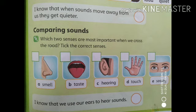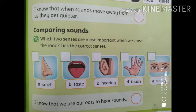So students, aapko kya lagta hai? Kaun se do senses jo hain, wo important hain jab hum road cross karte hain? Yes, very good — hearing and seeing. Two sense organs are very important: ear and eyes. So tick hearing and seeing — C part and E part. I hope you all have done these exercises in your book. Student, try to learn the exercise and do it in your book. Jazakallahu khayran kaseera.